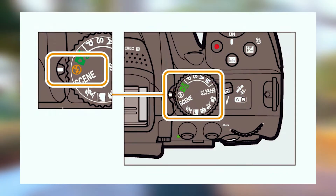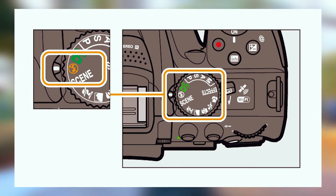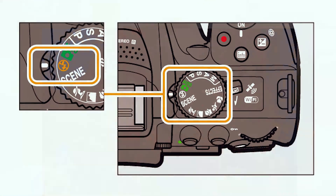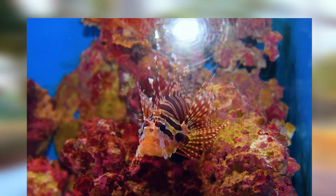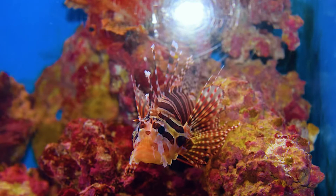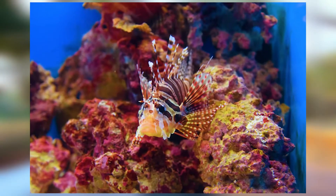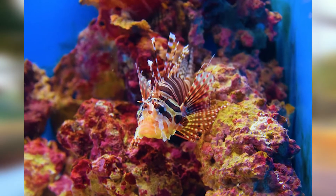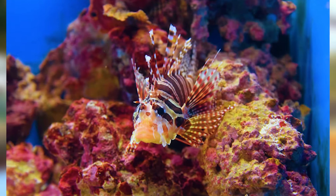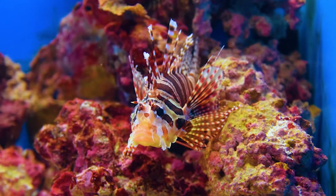The next mode is no flash mode. In no flash mode, the camera still handles automatic settings but restricts the flash. This is useful for capturing low light images without using flash, and they can look amazingly good.